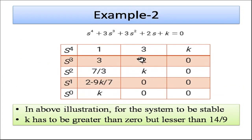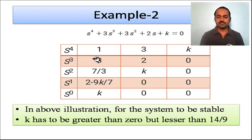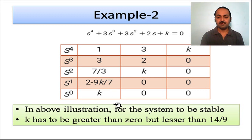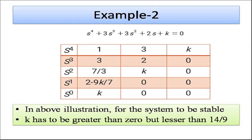In a second example: s^4 + 3s^3 + 3s^2 + 2s + k = 0. Coefficients are: s^4 is 1, s^3 is 3, s^2 is 3, s is 2, and the constant is k. The table is completed similarly, and by observing the first column, for the system to be stable, k must be greater than 0 but less than 14/9. This shows how Routh-Hurwitz criteria can be used to determine the range of a parameter for stability.